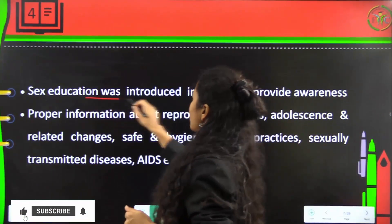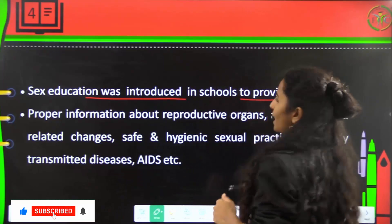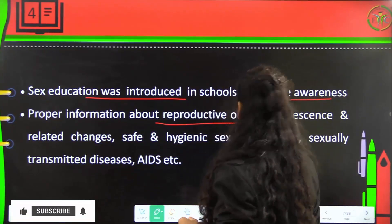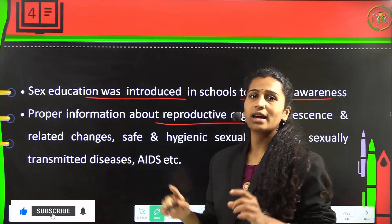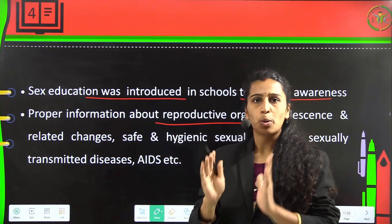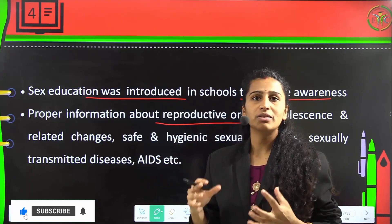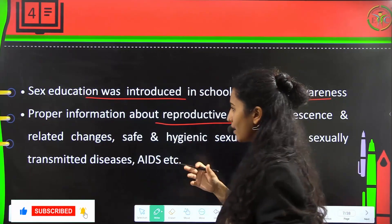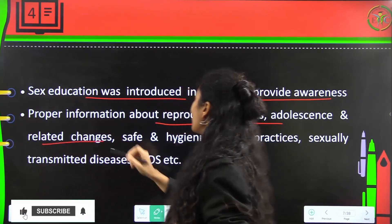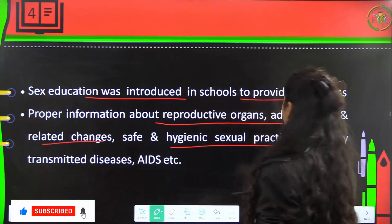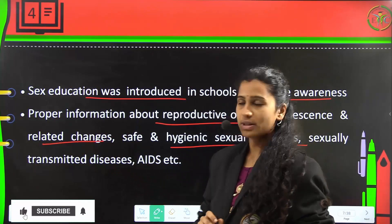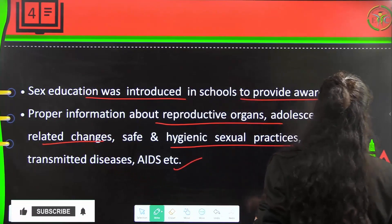Proper information about reproductive organs, adolescence, and related changes is provided. This helps people understand what is good and what is bad. Topics covered include safe and hygienic sexual practices, STDs — sexually transmitted diseases — and ultimately AIDS.